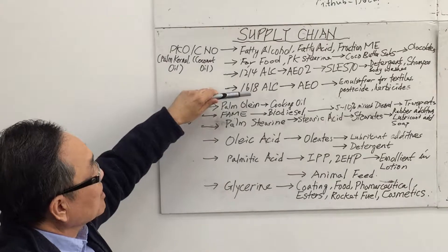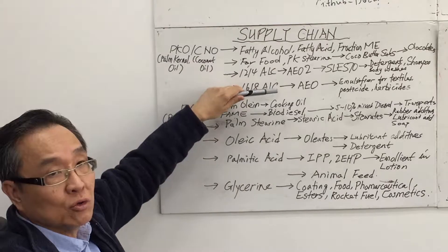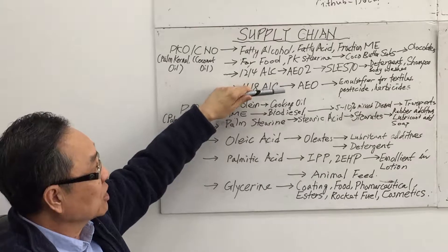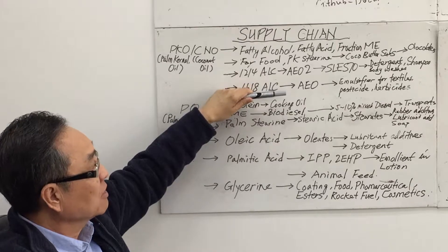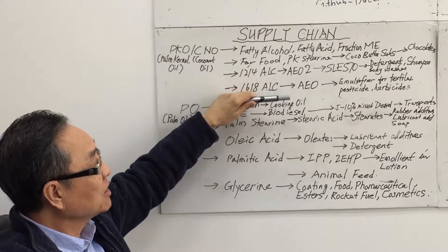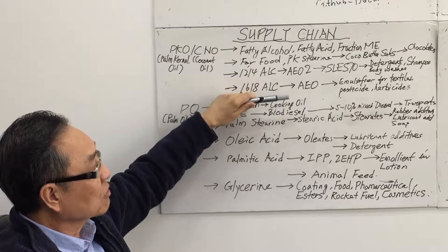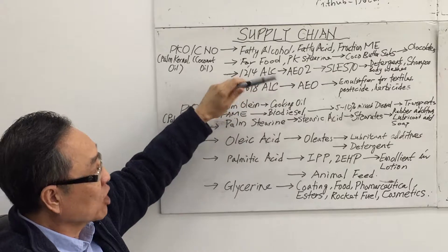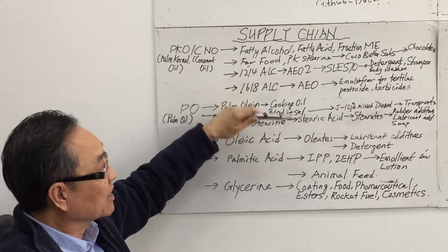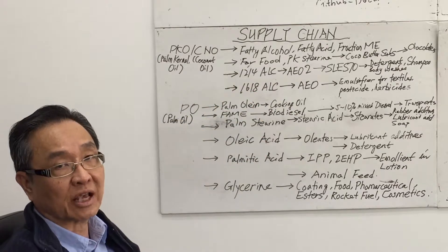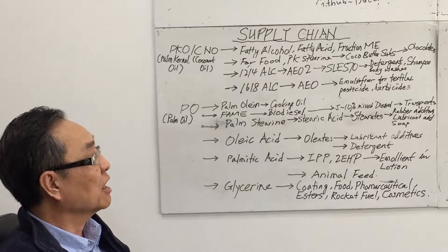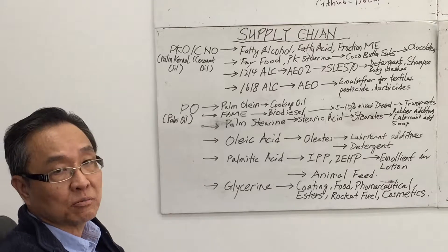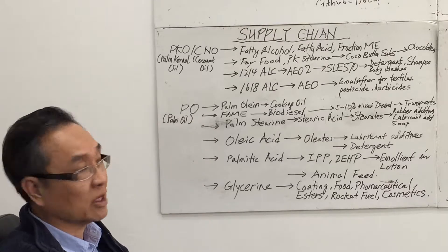The C16-18 alcohol can also be used for producing fatty alcohol ethoxylates. These fatty alcohol ethoxylates are used tremendously as an emulsifier in the textile and agricultural product industry.